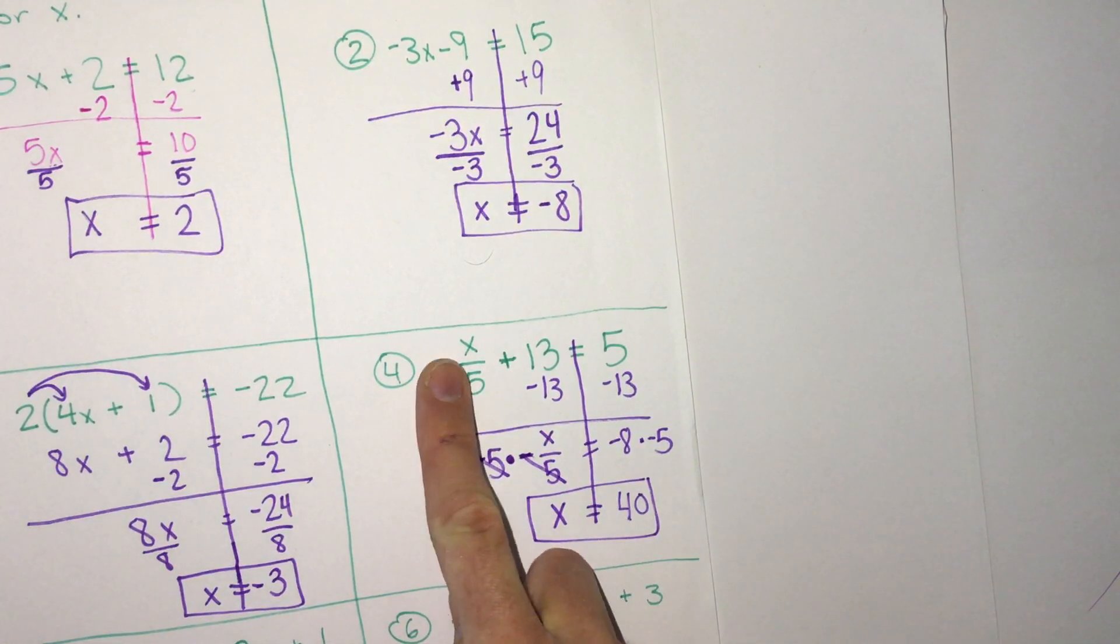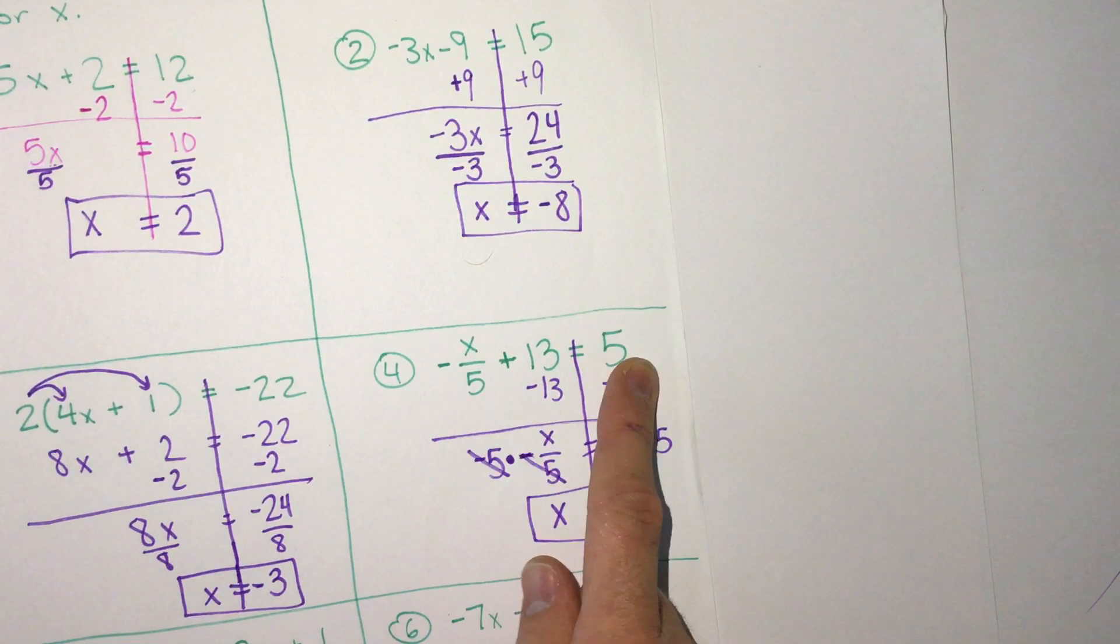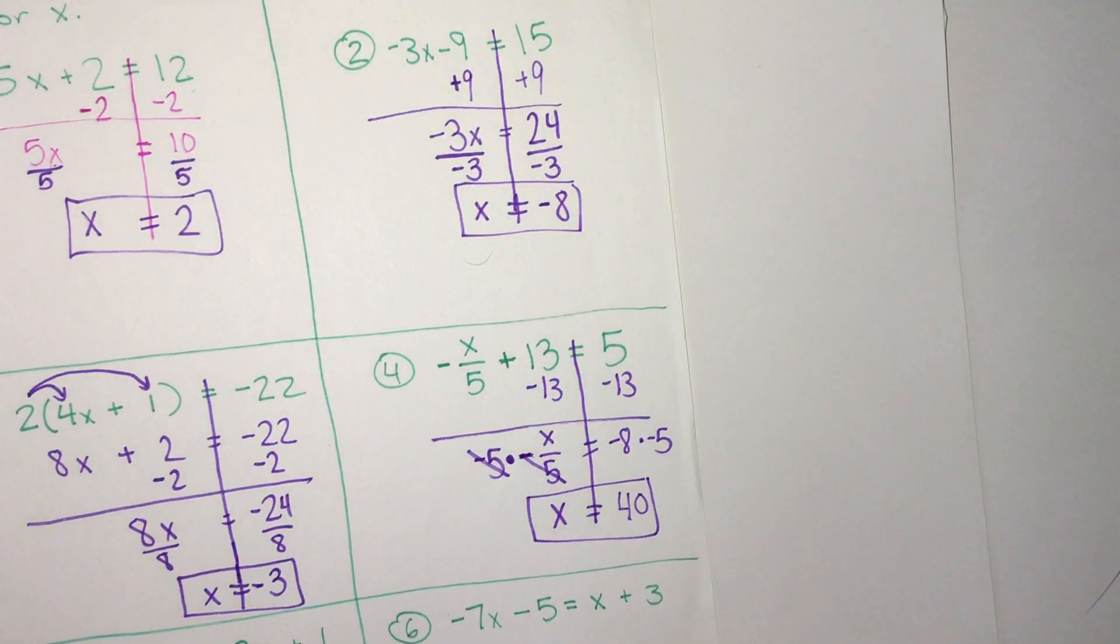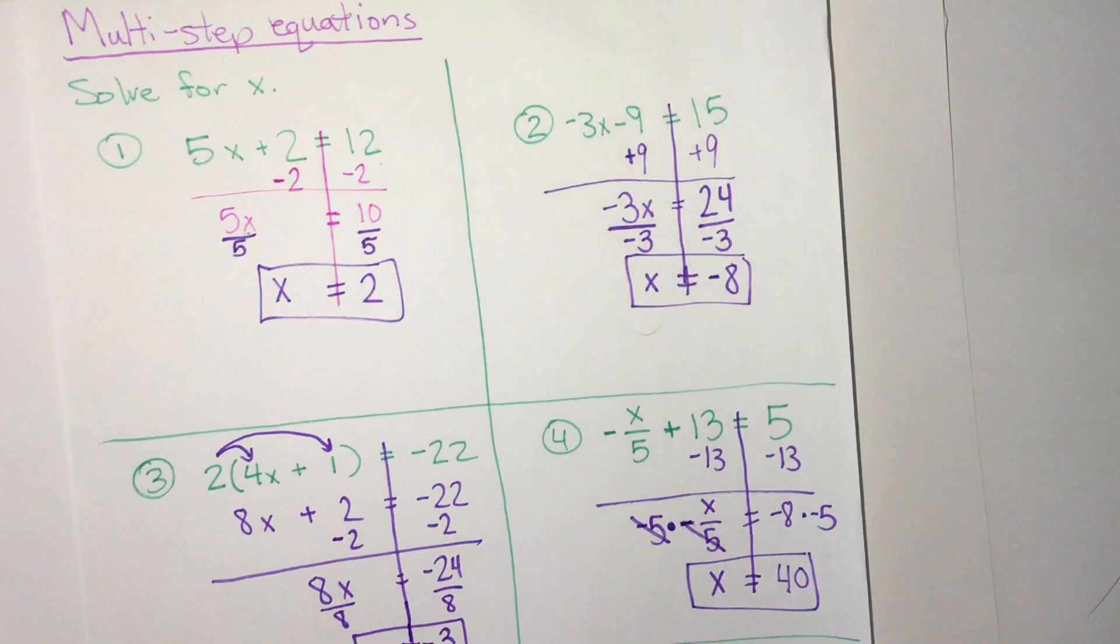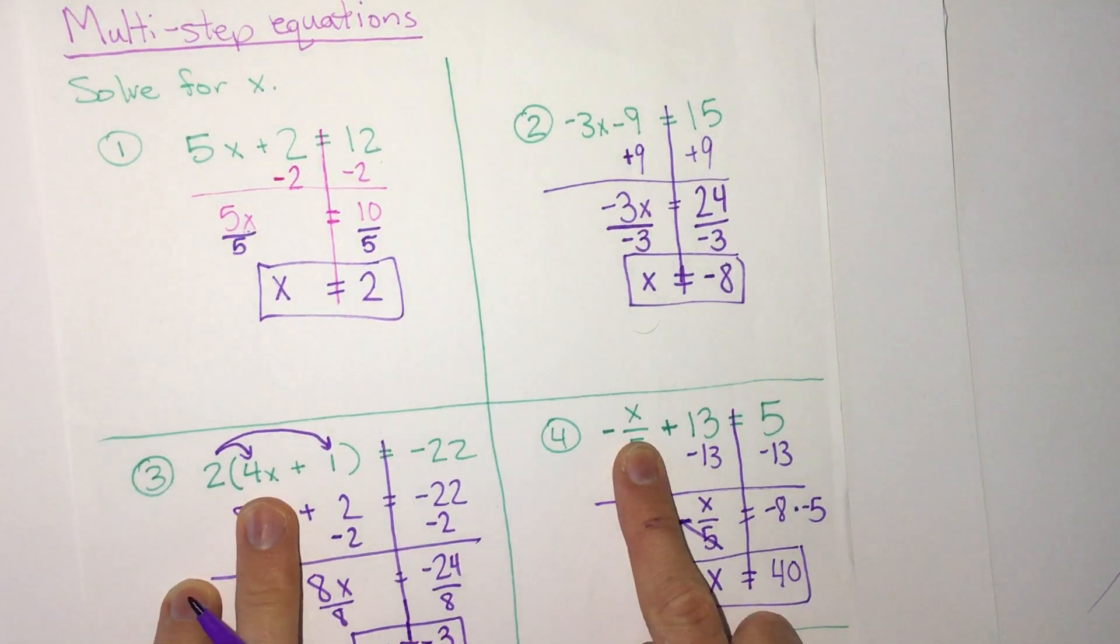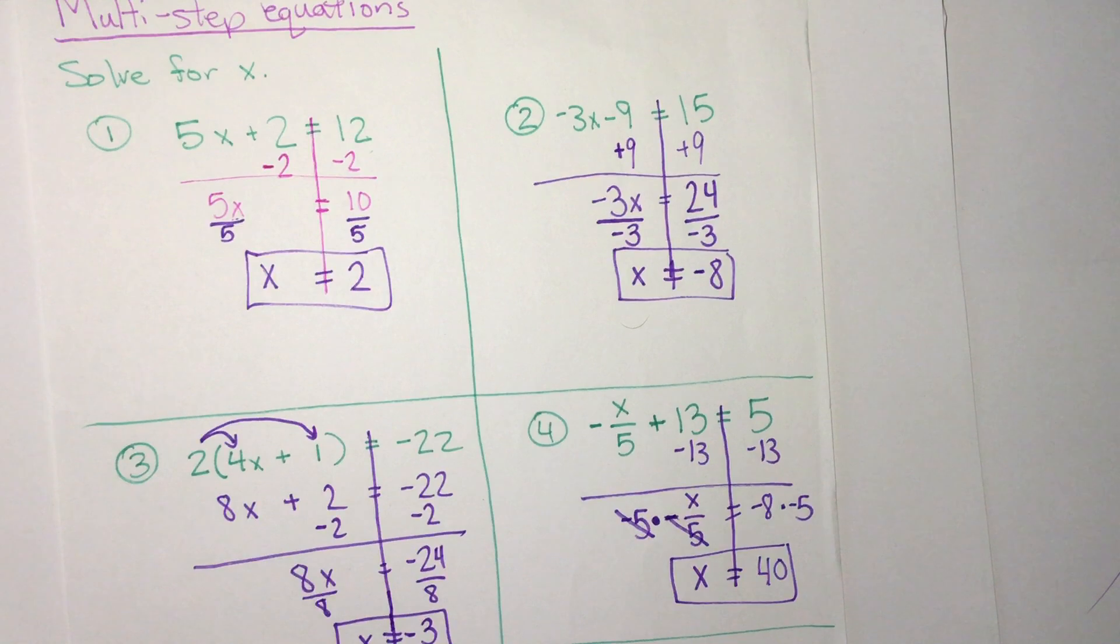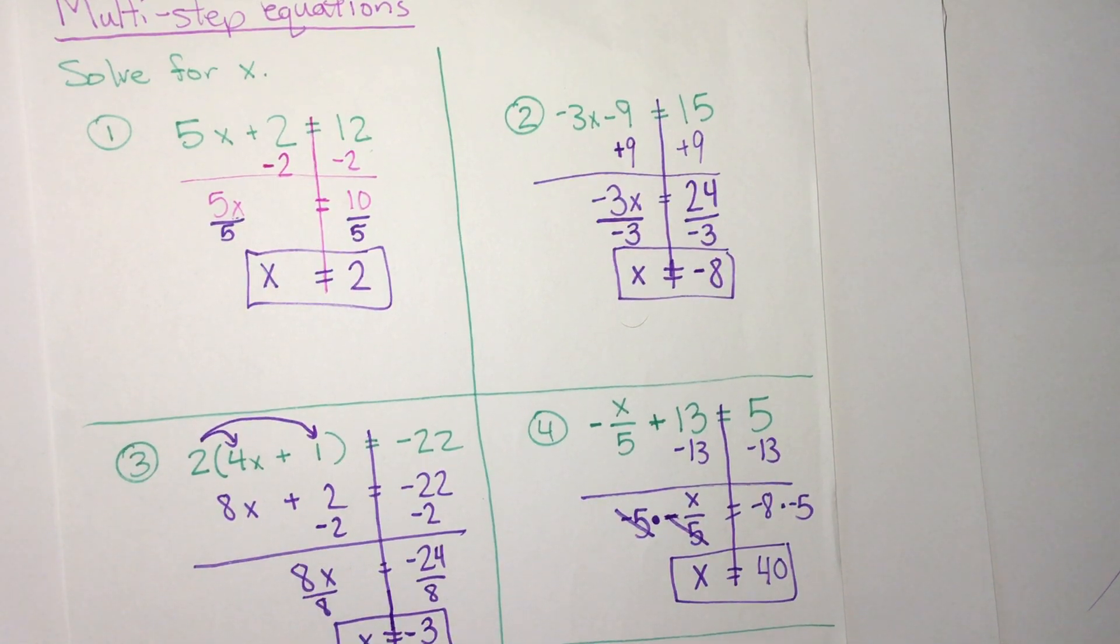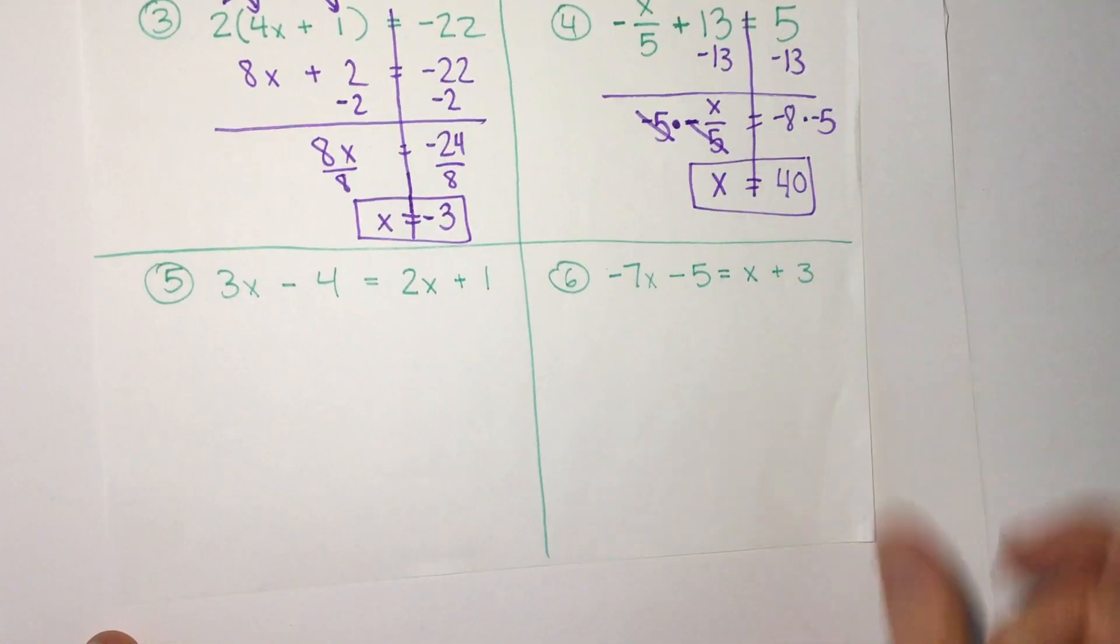And we can always confirm negative 40 divided by 5 is negative 8 plus 13. That's 5 equals 5. So this is our answer. So all four of these examples we've seen where we have x on one side, it would be the same idea if it was on the right side. We want to get x by itself. But what happens if we have x on both sides of the equation?